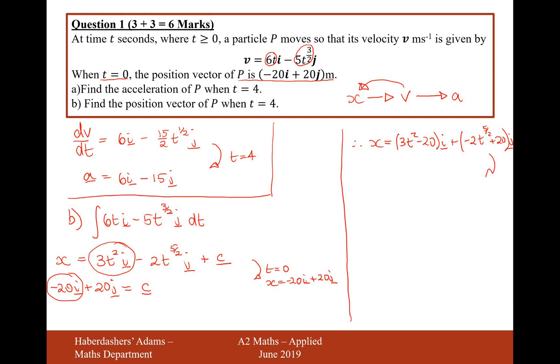And now all I need to do is now substitute in t equals 4 to get my answer for the position vector. So it's going to be x equals 4 squared is 16 times by 3 is 48. 48 minus 20 is 28i. And then 4 to the power of 5 over 2, that would be 2 to the power of 5, which is 32. Minus 2 is minus 64. And then add 20, that would be minus 44j.